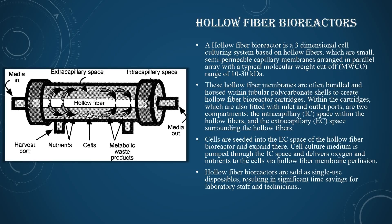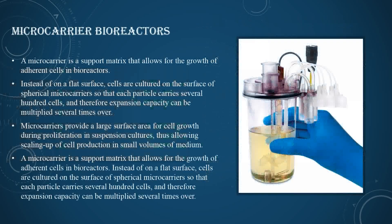The microcarrier bioreactor uses a support matrix that allows the growth of adherent cells in the bioreactor instead of on a flat surface. Cells are cultured on the surface of spherical microcarriers such that each particle carries several hundred cells, and therefore expansion capacity can be multiplied many times over. Microcarriers provide a large surface area for cell growth during proliferation in suspension culture.